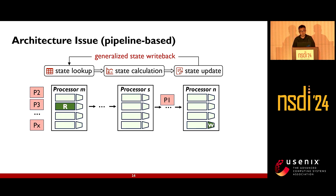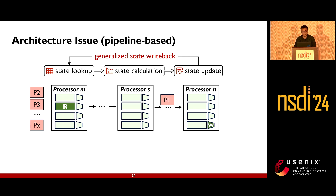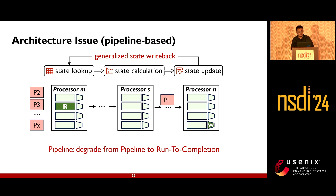In handling complex stateful network functions, two typical architectures — pipeline-based and multi-core-based — both experience a decline in performance. For pipeline-based architecture, when supporting complex stateful functions, they need to use the primitive recirculate to write back state to the state tables, lacking a direct path for quick state updates, and state consistency cannot be guaranteed. To ensure state consistency when packet P1 is in the pipeline, other packets from the same flow must wait, causing high-performance pipeline execution to degrade to run-to-completion execution.